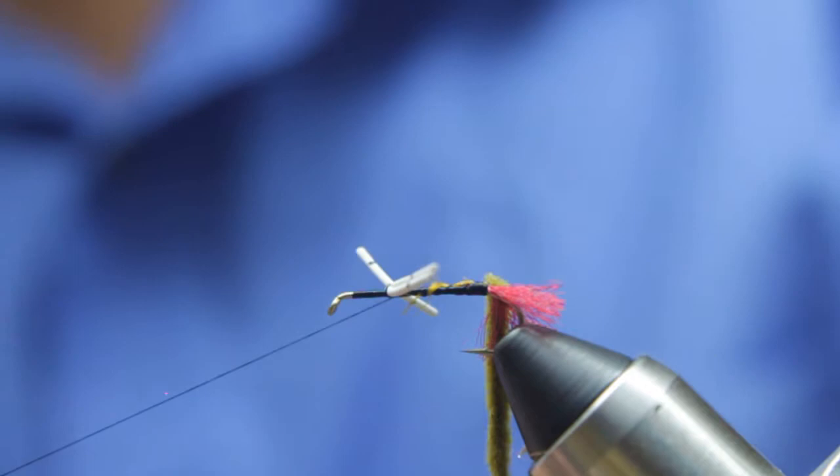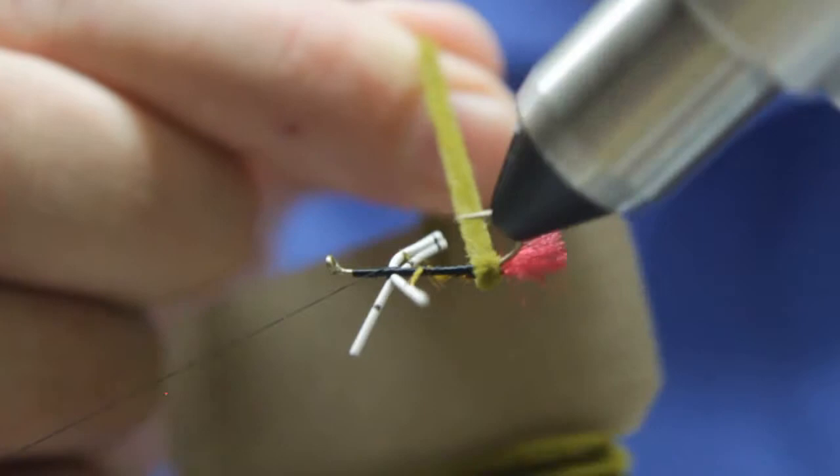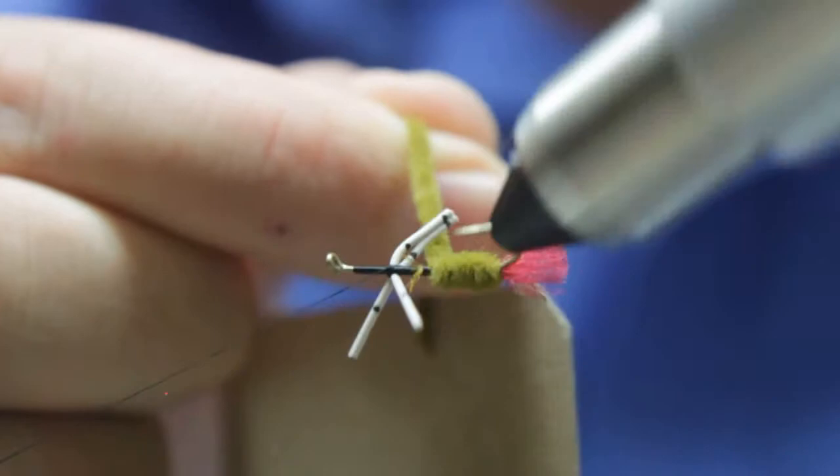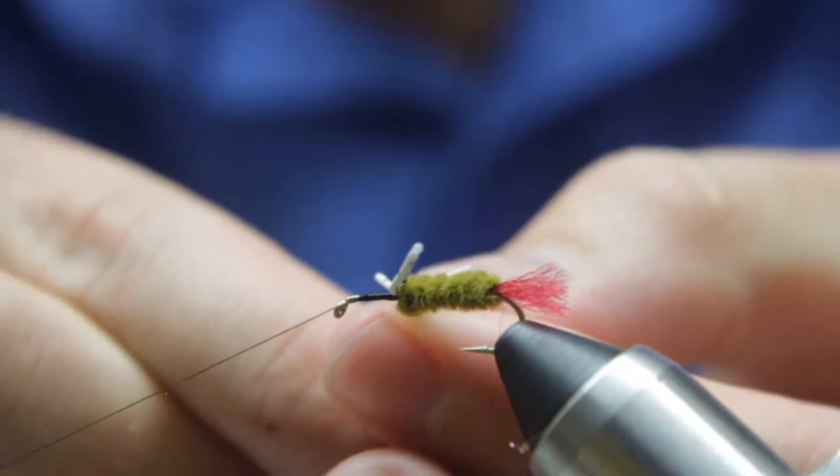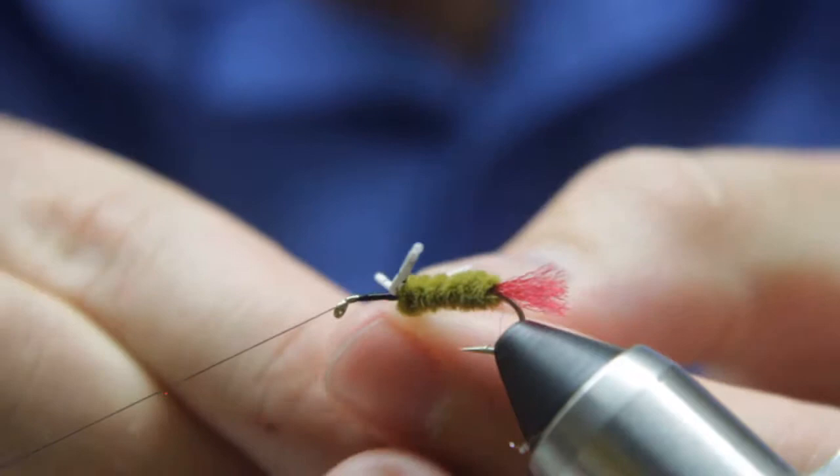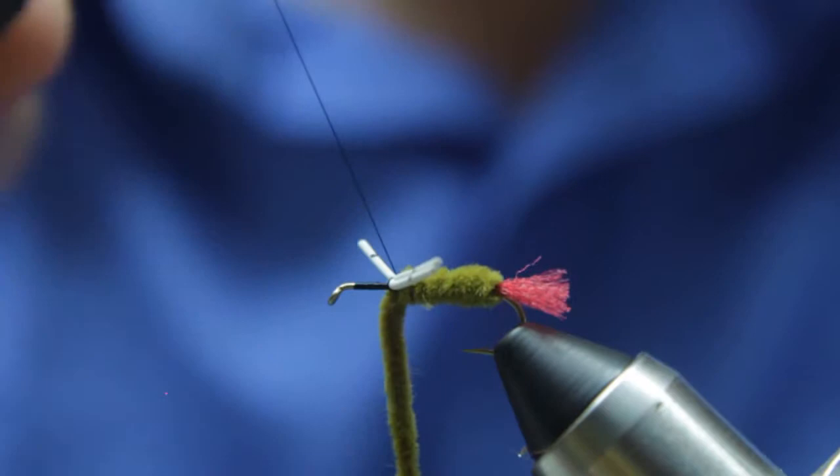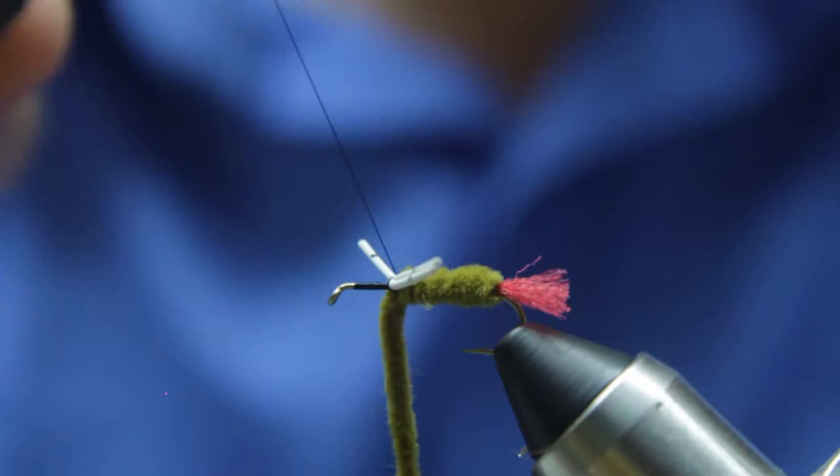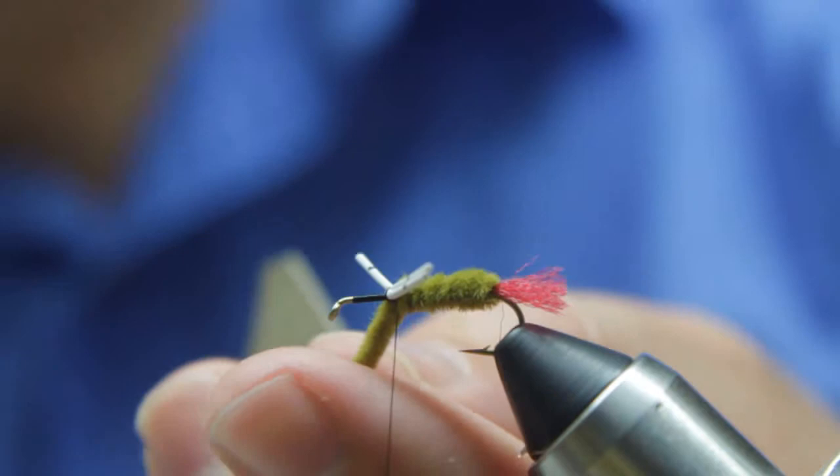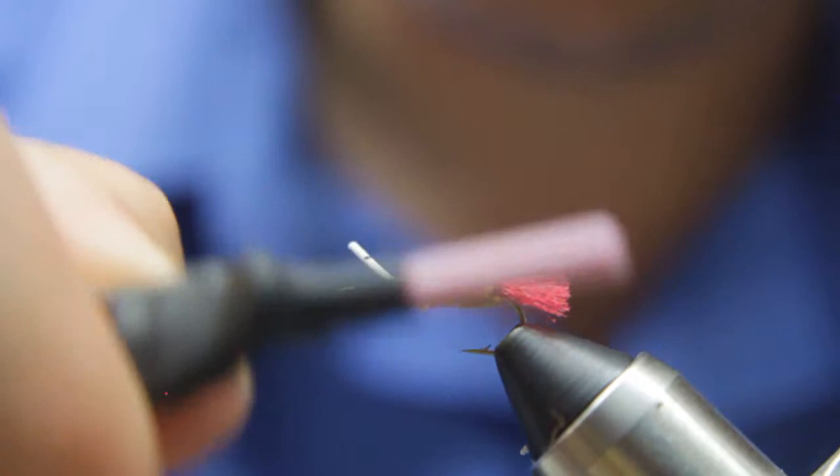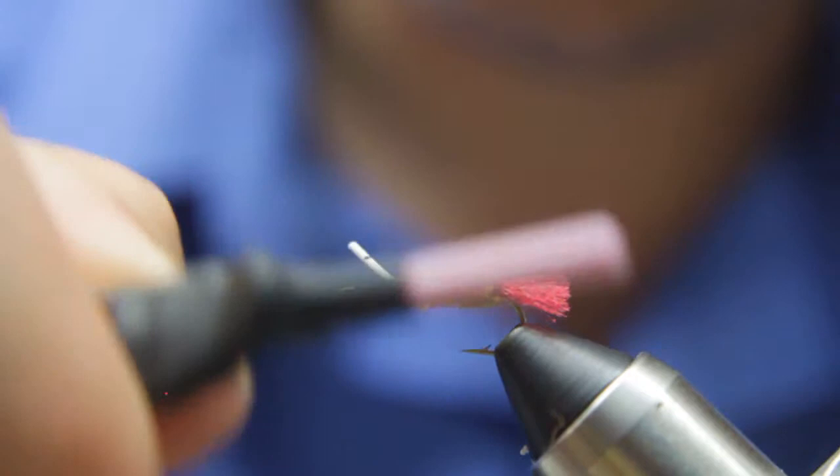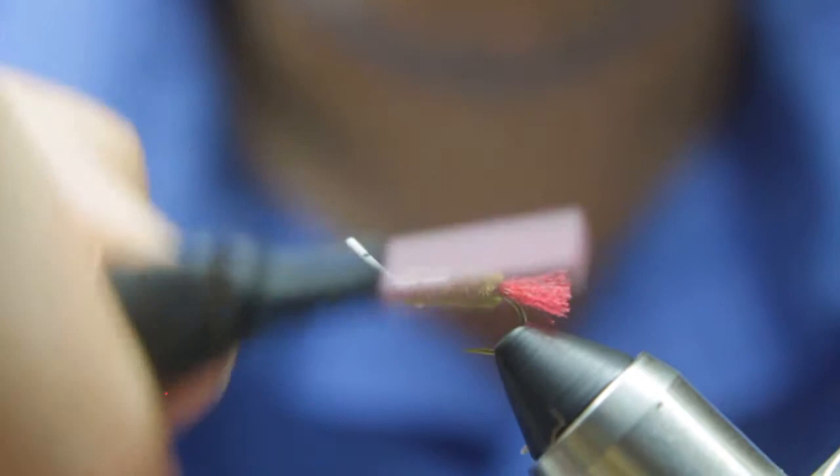And I'm going to wrap my chenille around so that it's all butted up against each other. I'm going to go all the way up to the back of the legs. Carefully not to get my legs caught in there. And right about there is good. And then I'm going to tie out my olive chenille. One, two, three. And be careful not to cut the thread. Cut my chenille off. I'm going to put a few more wraps in there. Make sure it's nice and secured.